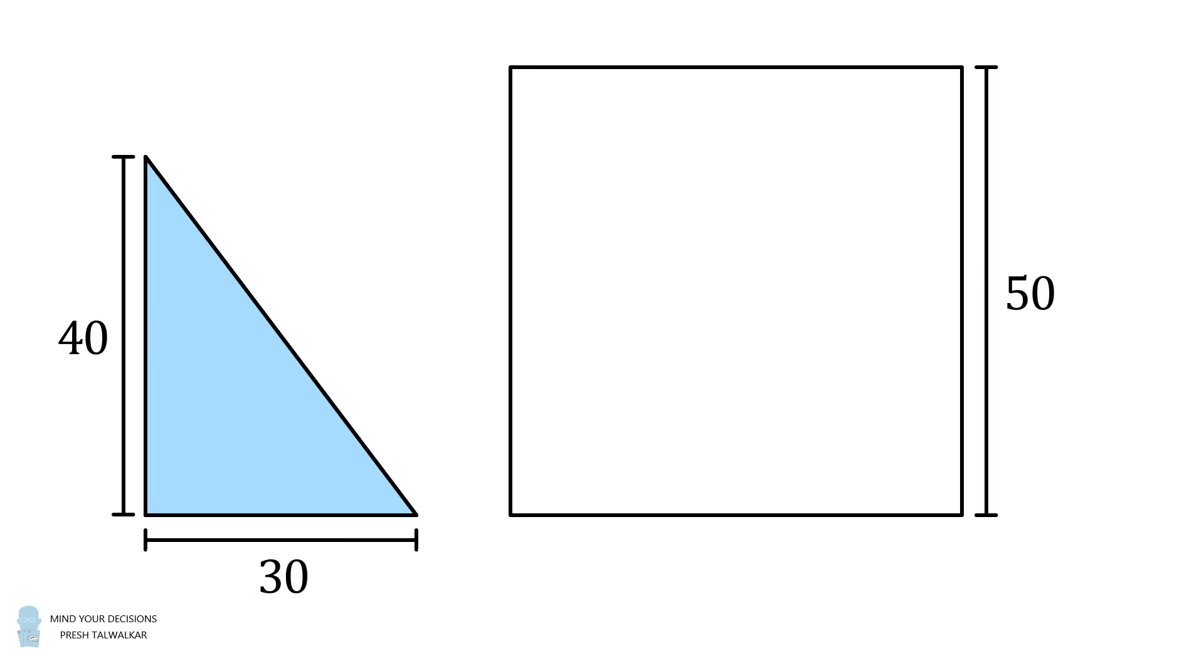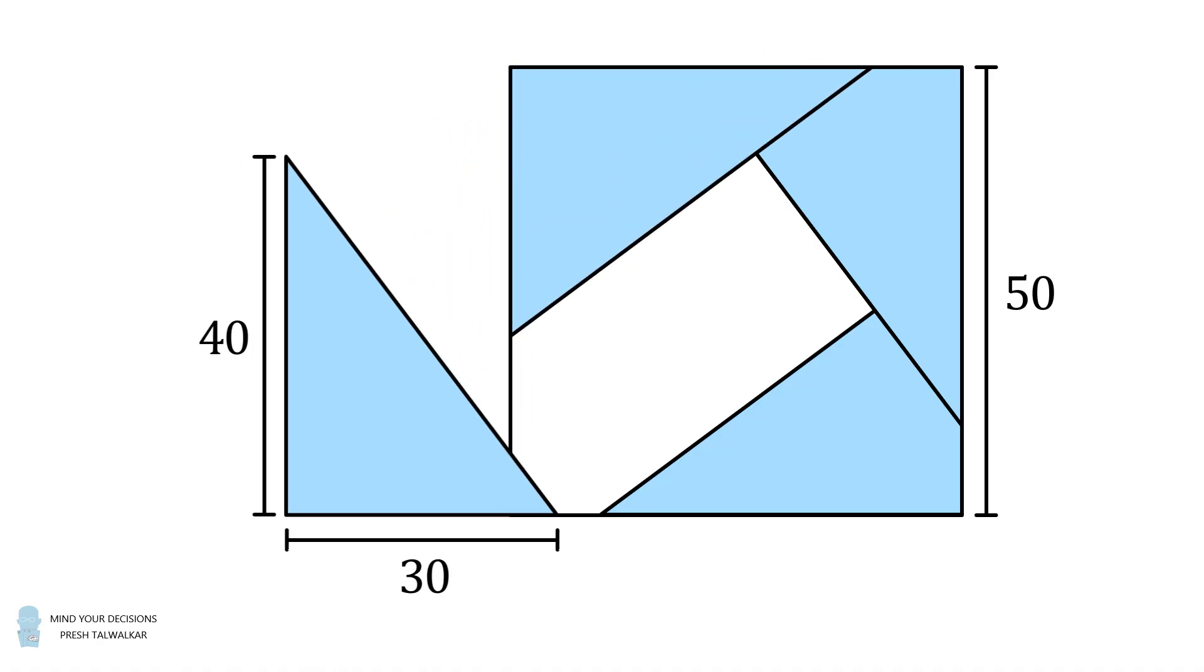Hey, this is Presh Talwalkar. Start with the square whose side length is equal to 50. Then consider a right triangle whose legs have lengths equal to 40 and 30. Four copies of this triangle are placed in the four different corners of the square. Each time the triangle is rotated 90 degrees as shown.